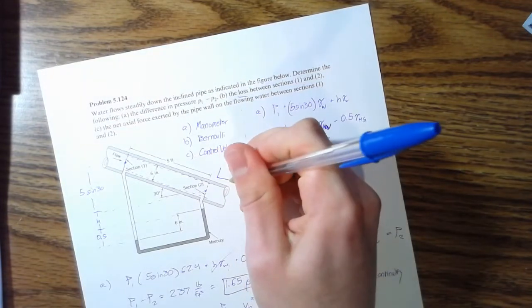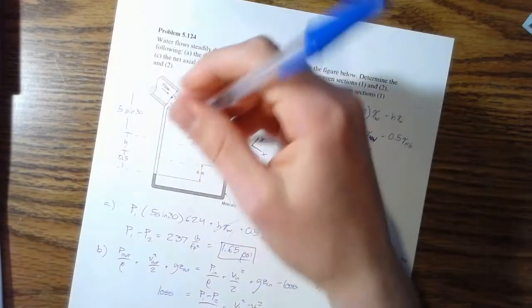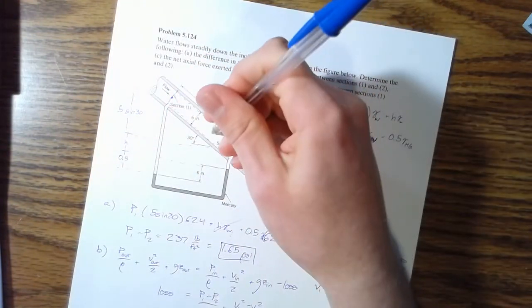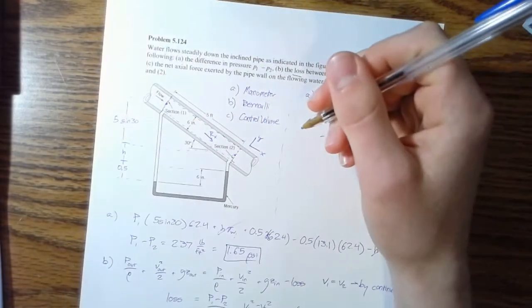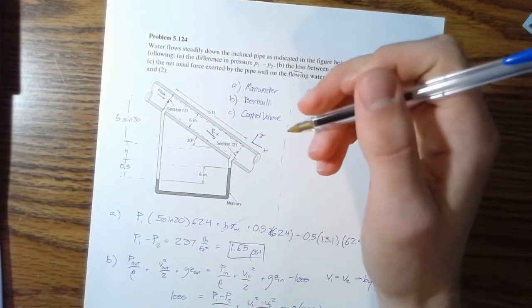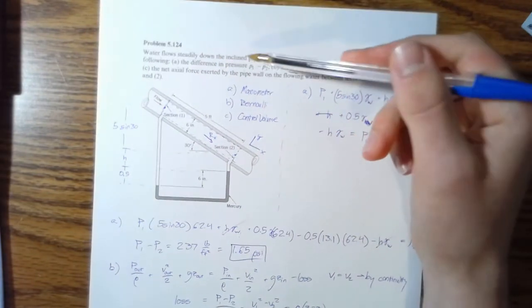All right. First, we're going to define our coordinate axes. We're going to go at an angle just to make our lives a little bit easier. So we know we're going to have some sort of reaction force RX or R sub X.